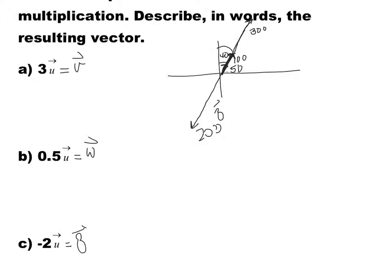Now, if you want to use the quadrant notation, then you have to find the angle that it makes with the north-south line. If I use the north one, then it's going to be this angle. We know that this angle here is 40, and this up to here is 180. So 180 plus 40 is 220. So this is going to be 200 kilometers per hour, and it's going to be north 220 degrees east.